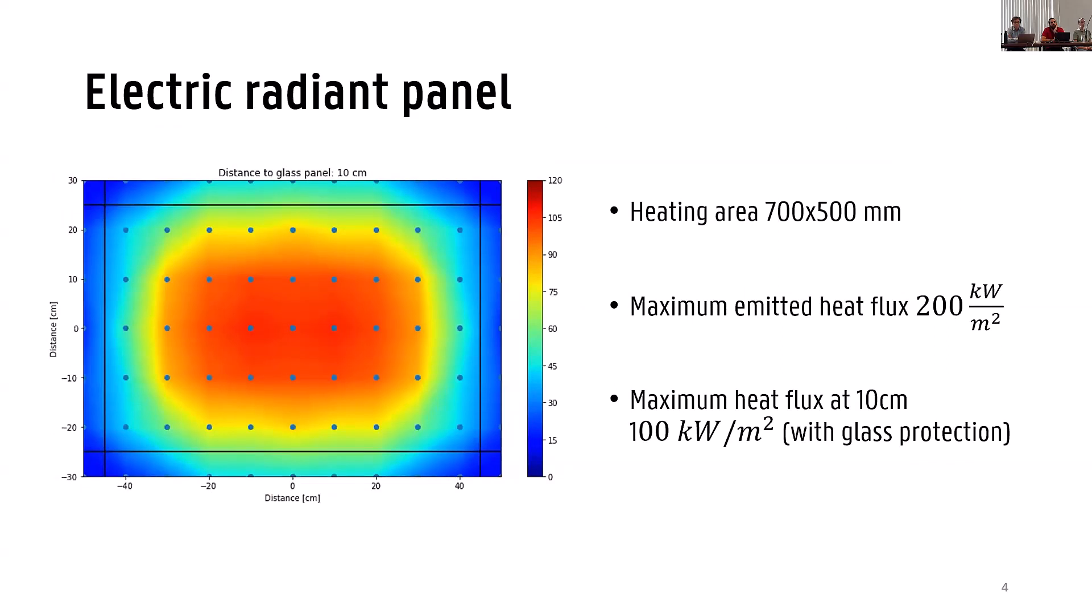As you can see here, just the capabilities of the electrical panel, so we can have a heat flux area of roughly 700 by 500 millimeters. At the surface of the radiant panel, we have high heat fluxes of 200 kilowatts per meter square, but at the distance of around 10 centimeters, where usually our specimens are, we can have maximum heat flux of 100 kilowatts per meter square. So we can simulate full natural fire exposure for a lot of different cases.